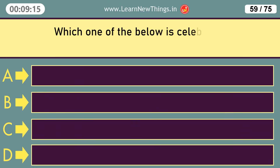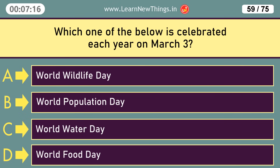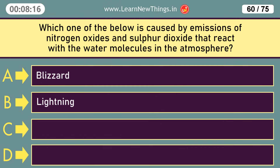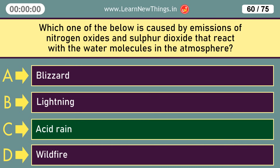Which one of the below is celebrated each year on March 3? World Wildlife Day. Which one of the below is caused by emissions of nitrogen oxides and sulfur dioxide that react with water molecules in the atmosphere? Acid rain.